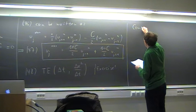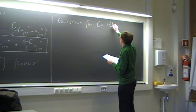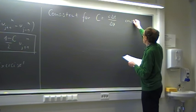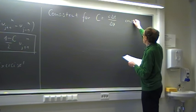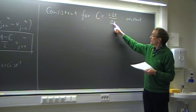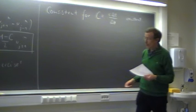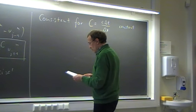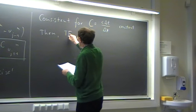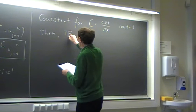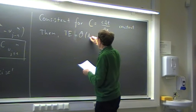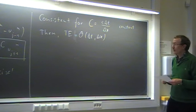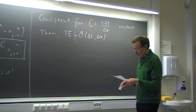So it is consistent if we choose the Courant number — c·Δt/Δx — to be constant, because then Δt is proportional to Δx. We get consistency and the truncation error is of order Δx, so the method is first order in space and time. From the truncation error analysis we can already see we must be careful with this method.